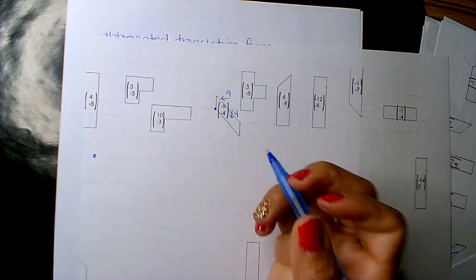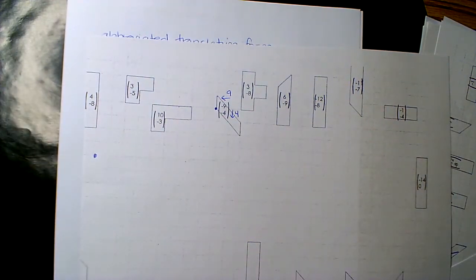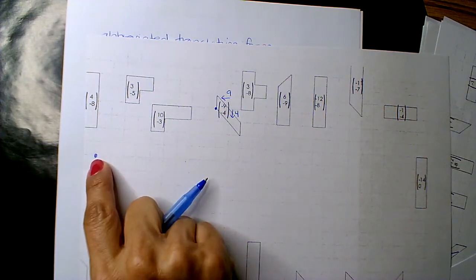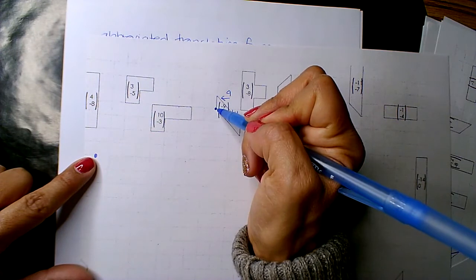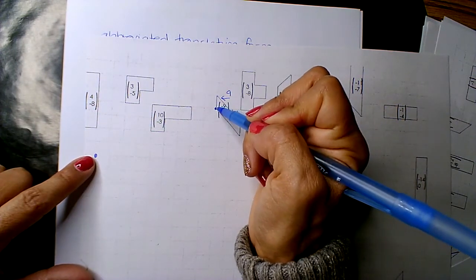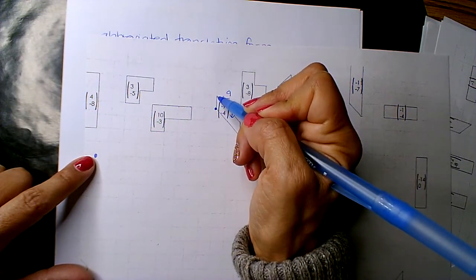And so, this paper is kind of cut. I'm going to go back 9, 4. This is the pre-image point. This is the image point. So, now, I need to do it for each of these.